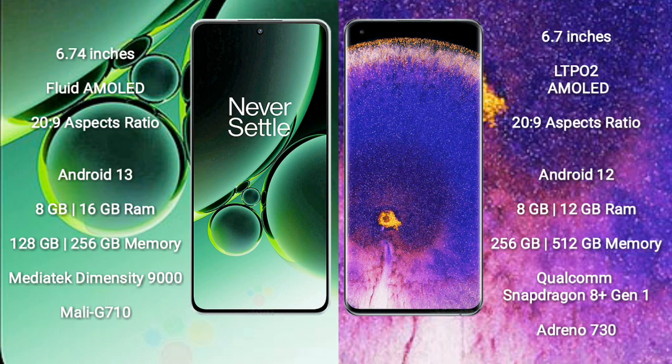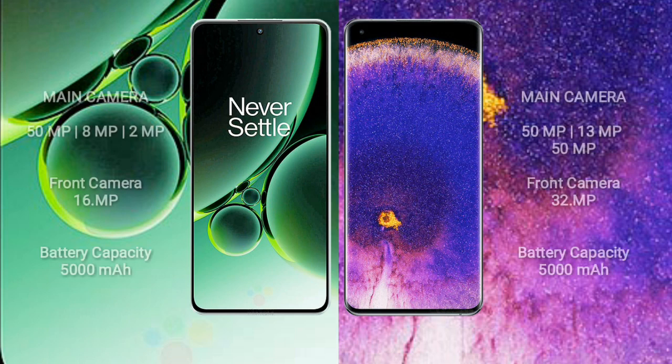OnePlus Nord 3 comes with 8GB or 16GB RAM and 128GB or 256GB internal storage, a MediaTek Dimensity 9000 processor, and Mali-G710 GPU. Oppo Find X5 Pro comes with 8GB or 12GB RAM and 256GB or 512GB internal storage, a Qualcomm Snapdragon 8 Gen 1 processor, and Adreno 730 GPU.